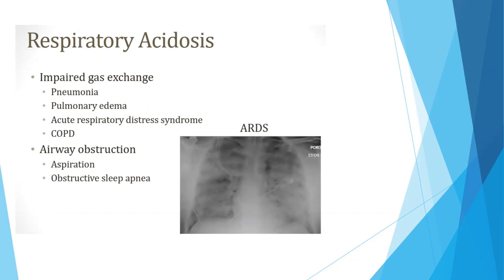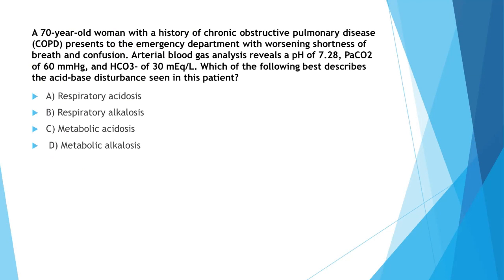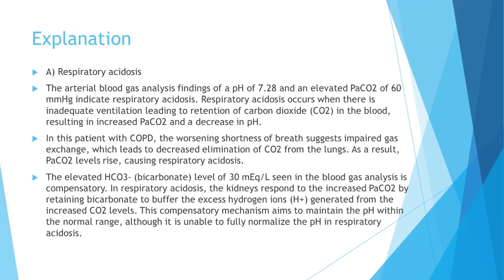Respiratory acidosis results from impaired gas exchange due to pneumonia, pulmonary edema, ARDS, or COPD, and airway obstruction from aspiration or obstructive sleep apnea. Returning to our question: the ABG findings of pH 7.28 and elevated pCO2 of 60 indicate respiratory acidosis. In this COPD patient, worsening shortness of breath suggests impaired gas exchange leading to decreased elimination of CO2, causing the pH to drop. The elevated bicarbonate of 30 is due to the compensatory mechanism.